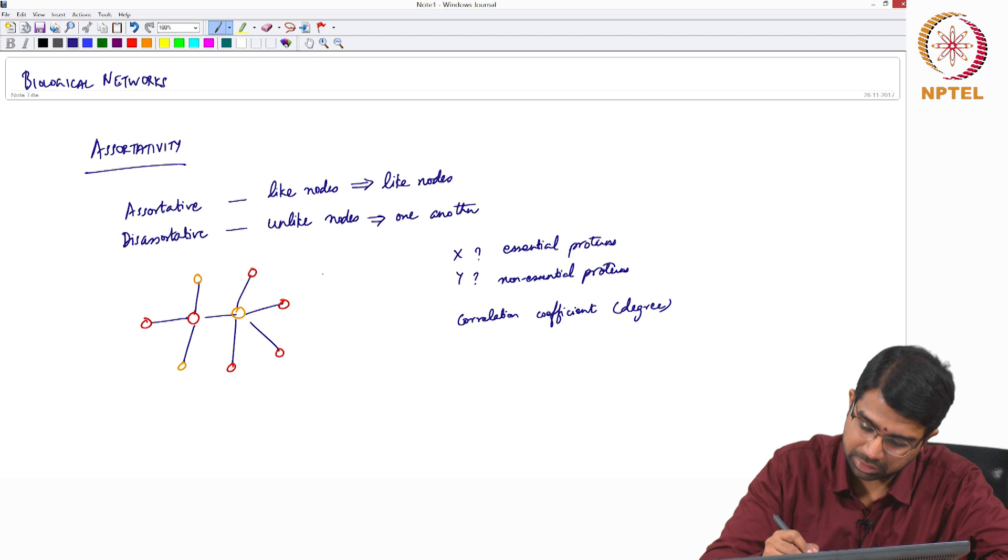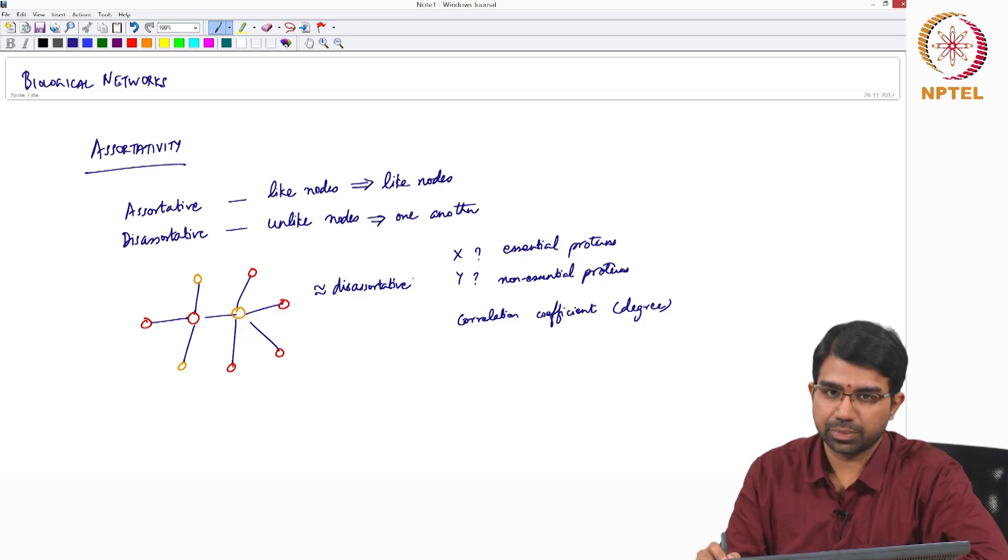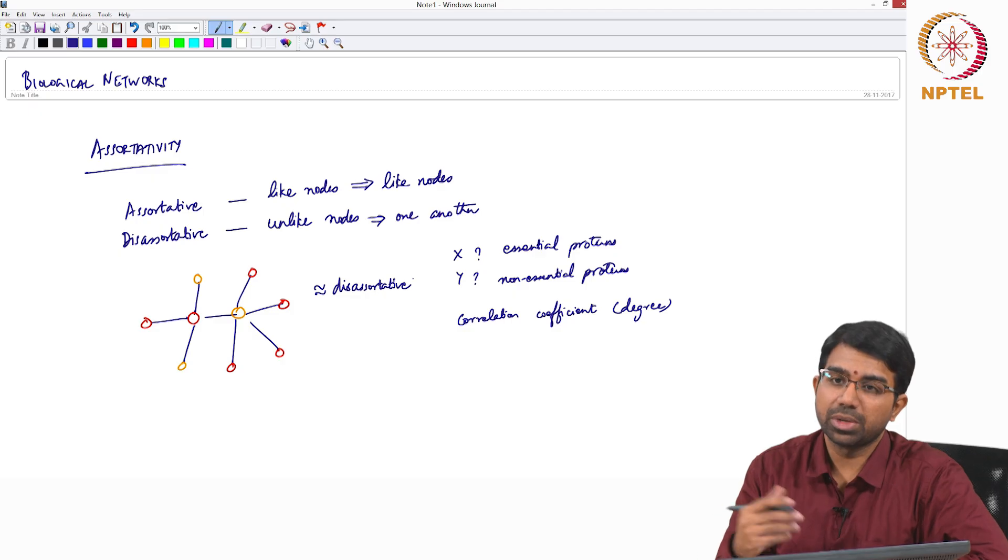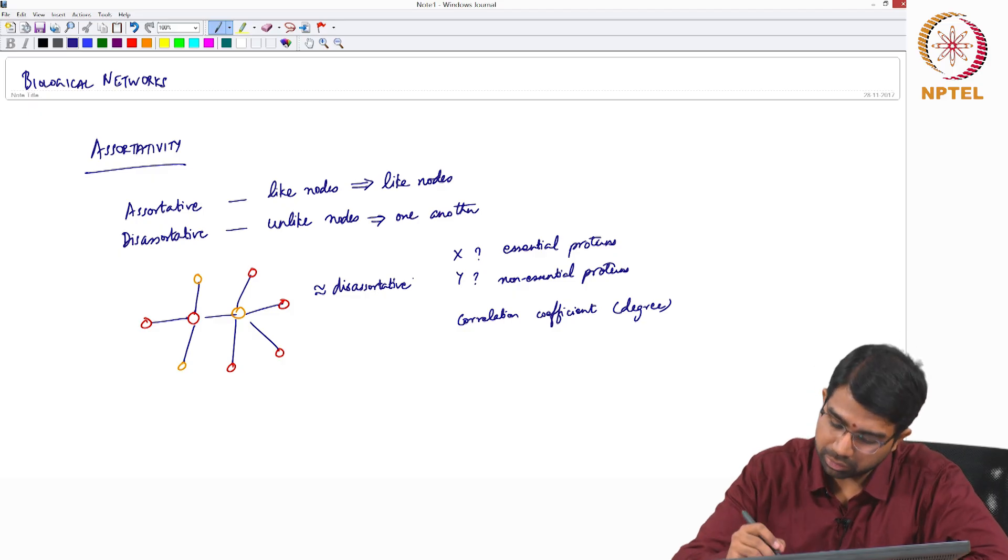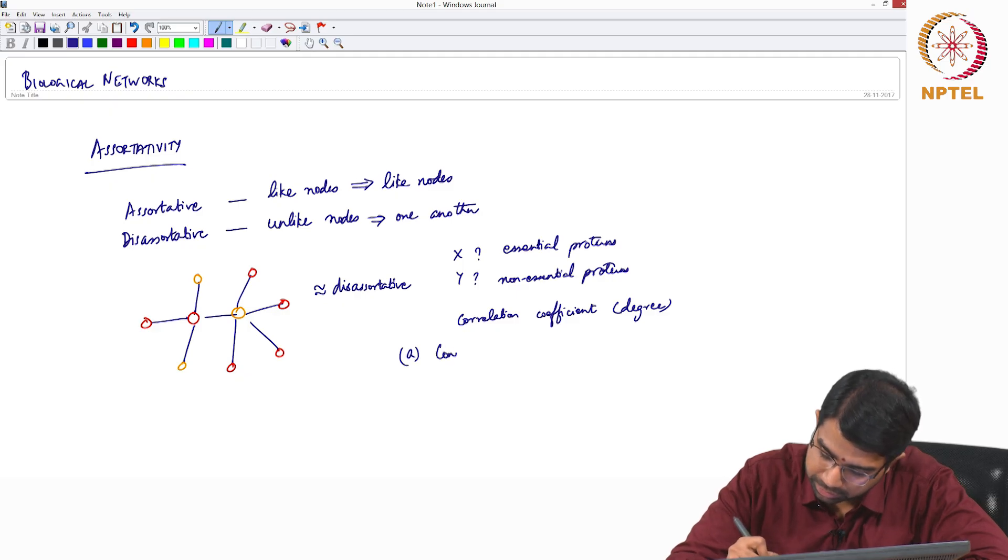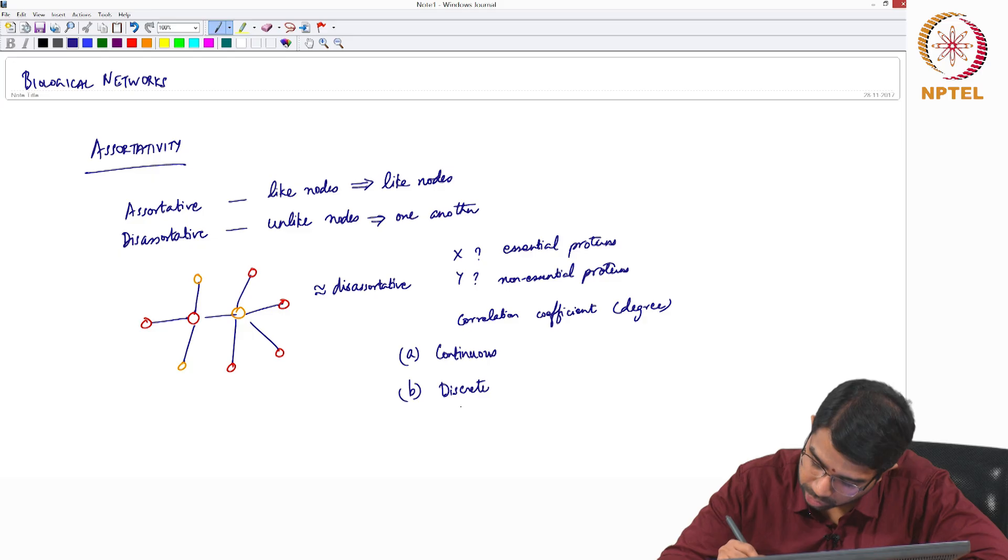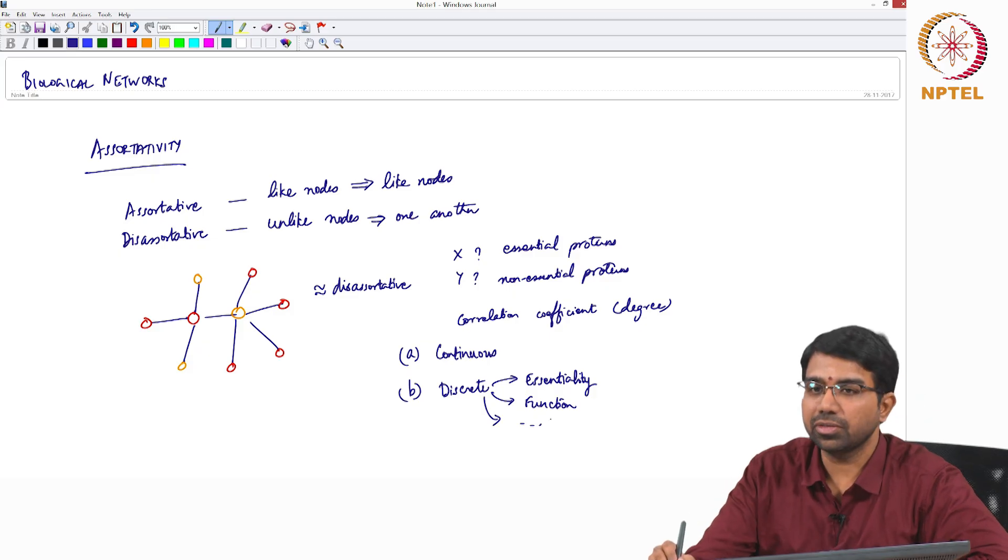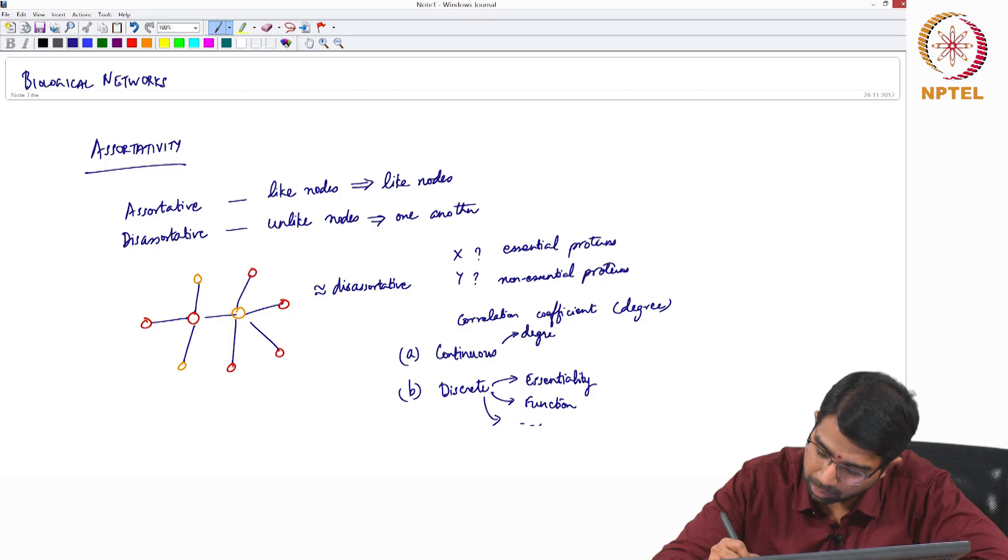How do you study or how do you quantify disassortativity or assortativity? There are two types of measures that you can have. A, if your measure is continuous, and B, if your measure is discrete. If it is discrete, you may have something like essentiality, function, or any other kind of property. Continuous you could have degree or other centrality measures.